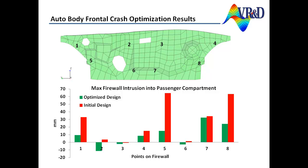This video showed the improvement of a structure for full frontal crash. Using ESL Dyna, it is also possible to improve results for other types of crash such as side impact, roof crush, frontal offset, and more. Besides topometry optimization, ESL Dyna also supports sizing, shape, topology, and freeform optimization.